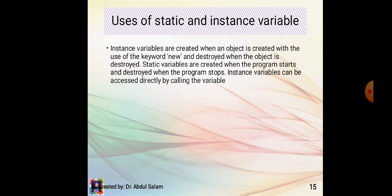Uses of static and instance variables: instance variables are created when an object is created with the use of the keyword new, and destroyed when the object is destroyed. Static variables are created when the program starts and destroyed when the program stops. Instance variables can be accessed directly by calling the variable name.